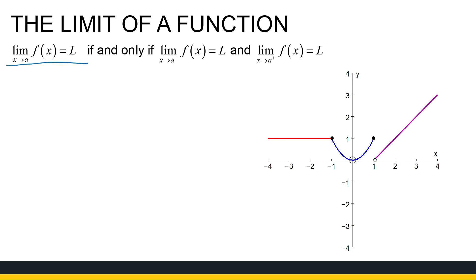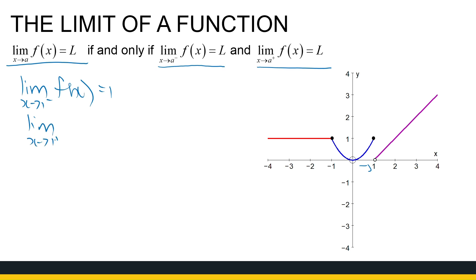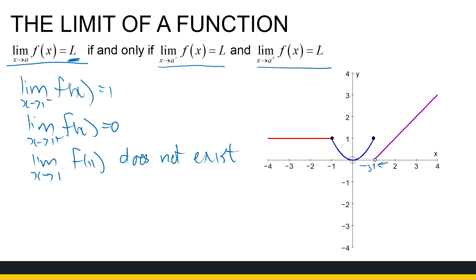We say the limit as x approaches a of f of x is equal to L if and only if the limit from the left and from the right are both equal to L. In the previous example, the limit as x approaches 1 from the negative side is equal to 1, and the limit as x approaches 1 from the positive side is equal to 0. They're not equal — they do not approach the same thing — so the limit as x approaches 1 of this function does not exist, because this limit only equals a specific number if from the left and from the right we're going to the same number.